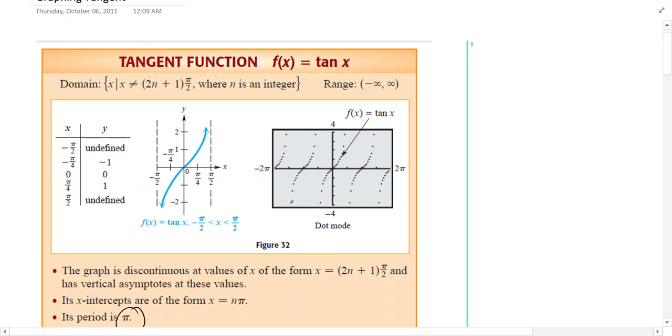If n is 0, you're going to have 1 at pi over 2. If n is 1, you're going to be at 3 pi over 2. If n is 2, you're going to go on and on. So that's the restriction on the domain.